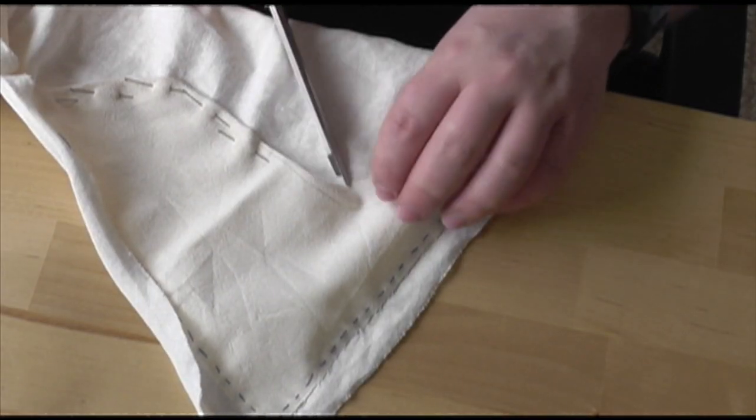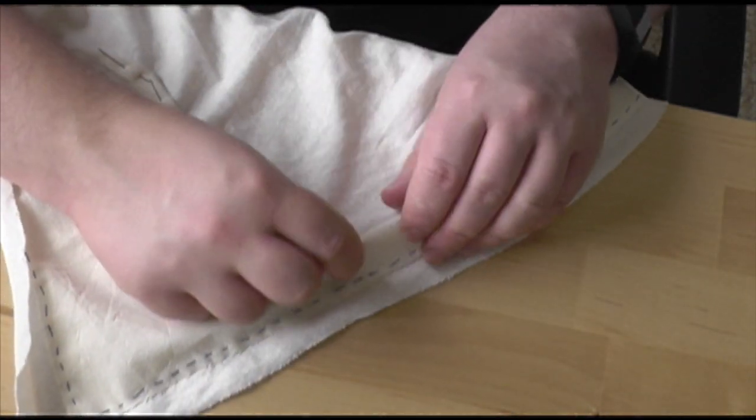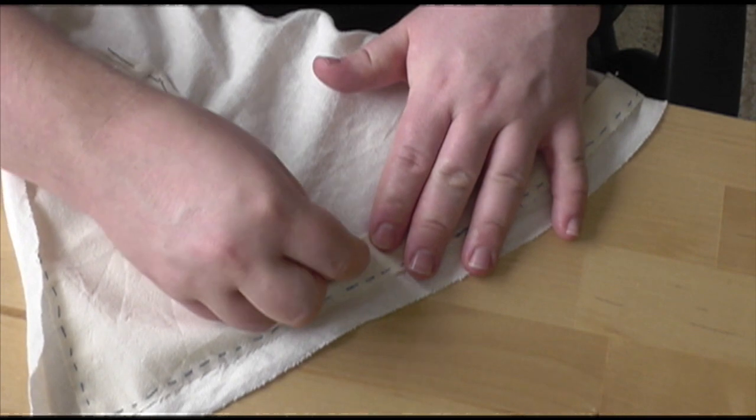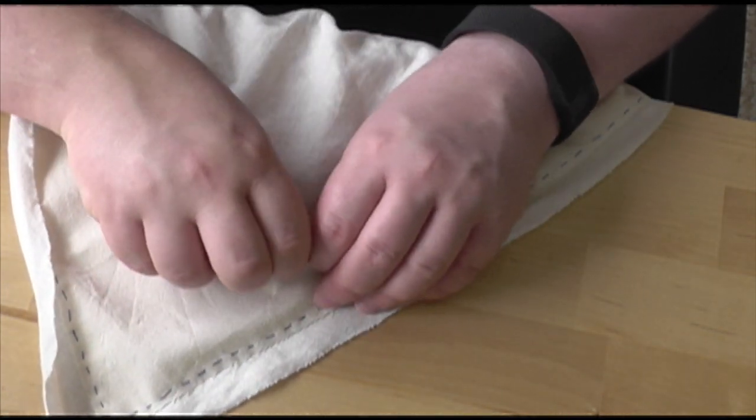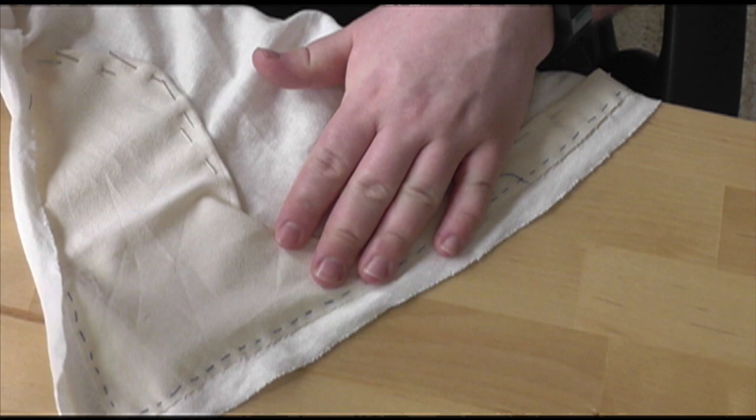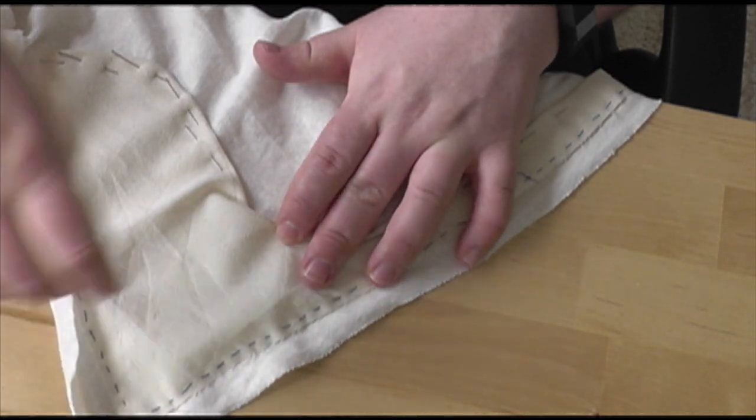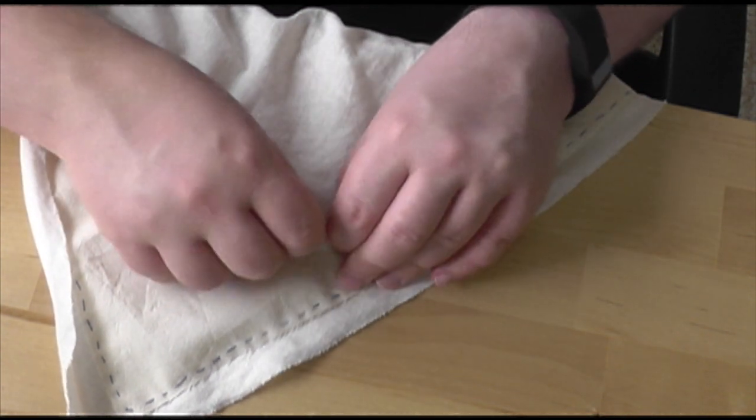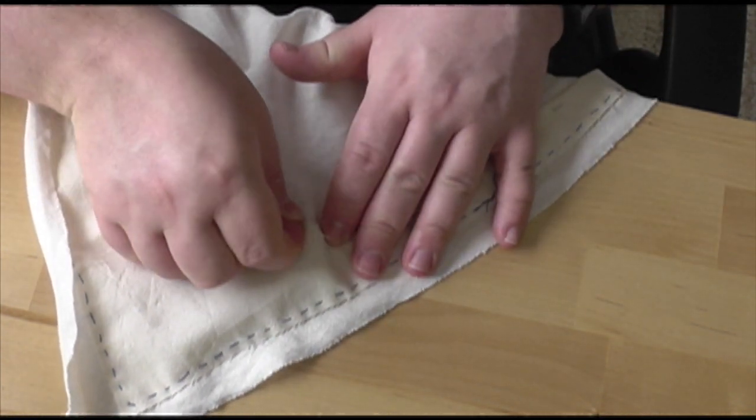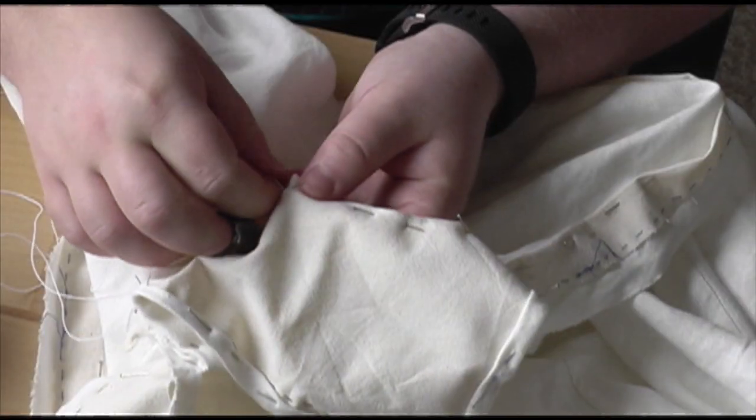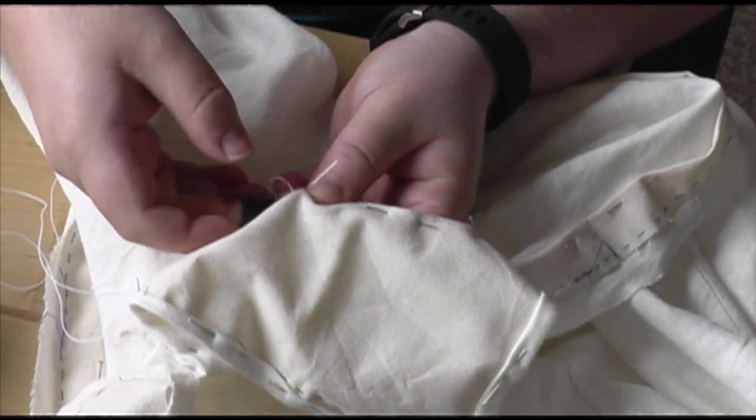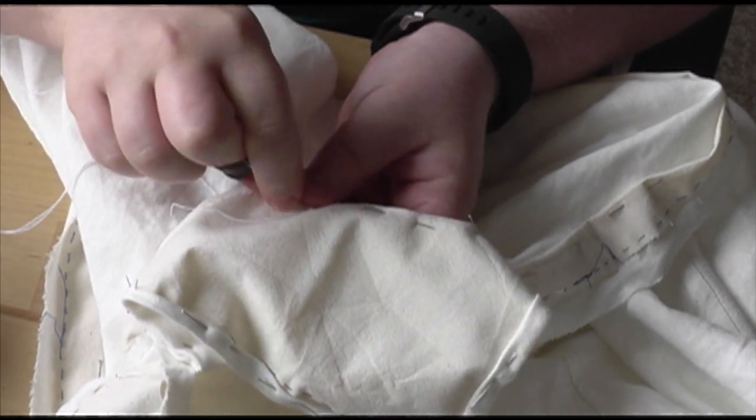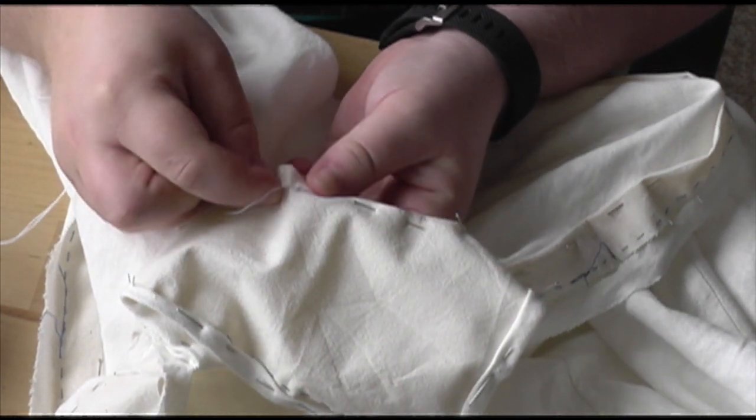Then I folded the seam allowance under, clipping where necessary. This is only a single fold, as it will be against the outside layer, protecting the raw edge. You could fell this into place along the outside layer, if you want, to make sure that it won't move or turn up, but I opted to use a running stitch instead, trusting the points to keep it in place.